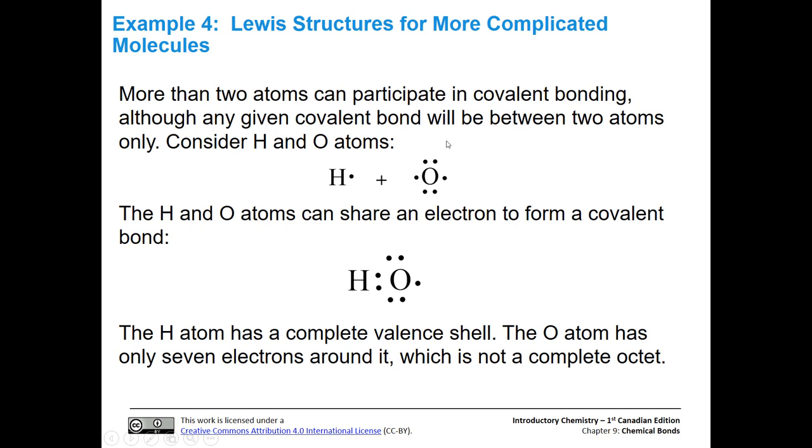I've been showing examples of two atoms getting together and forming a covalent bond, but you can have more than two in a structure. Each given covalent bond is only going to be between two atoms and represent two electrons, but we can have more than one atom bonded to this central atom. Let's look at hydrogen and oxygen atoms. Oxygen has six valence electrons. It has two sets of lone pairs and one that is available to share with another atom.